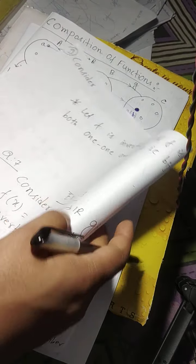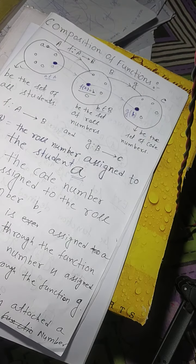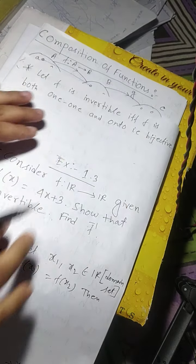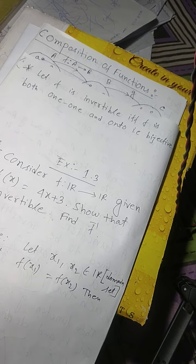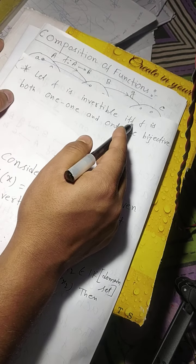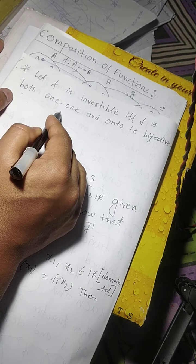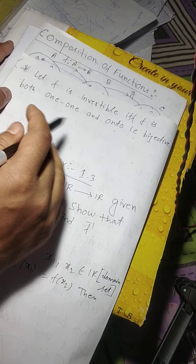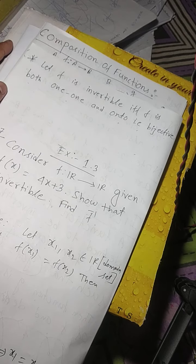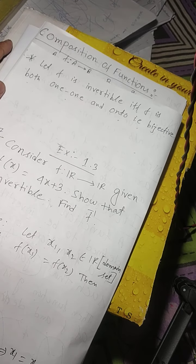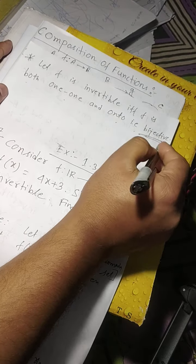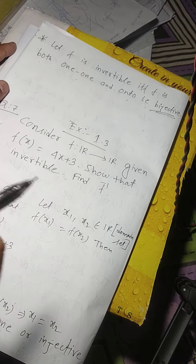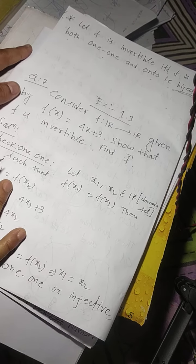Now I am giving a theorem: f is invertible if and only if f is both one-one and onto, that is bijective. So first we have to know how to find the bijective function. I think I have already discussed how to find the bijective function.